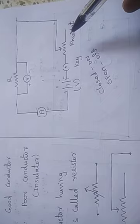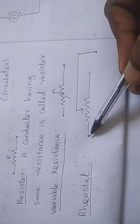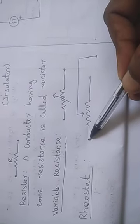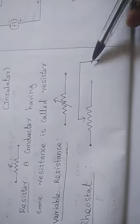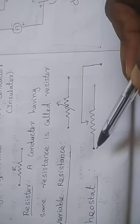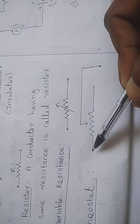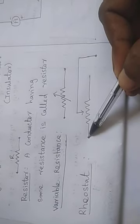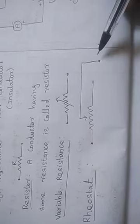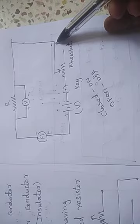This is the symbol of the rheostat. Note that the two terminals of the rheostat — the dots are here and here, never in the middle. You should connect the two terminals: this is one end, and another end is this one.